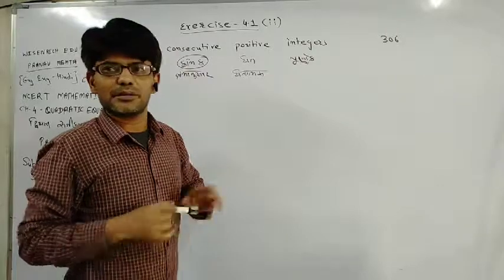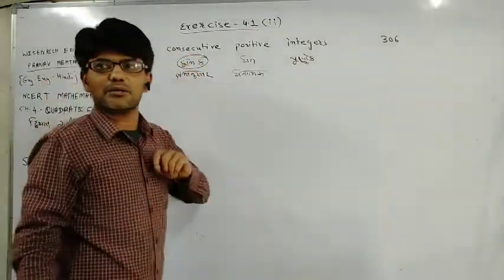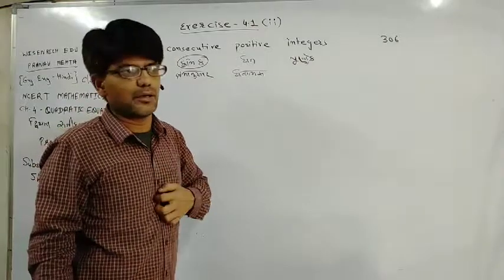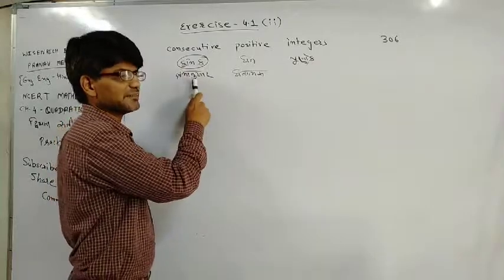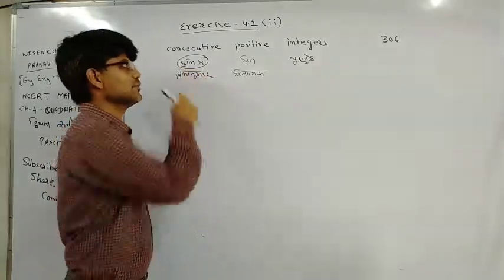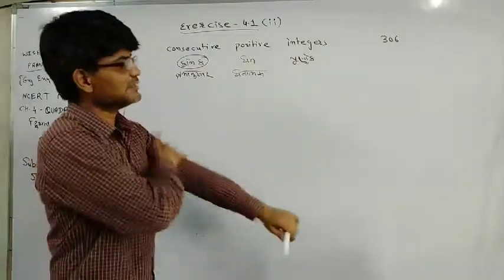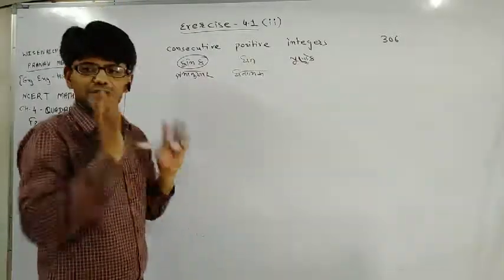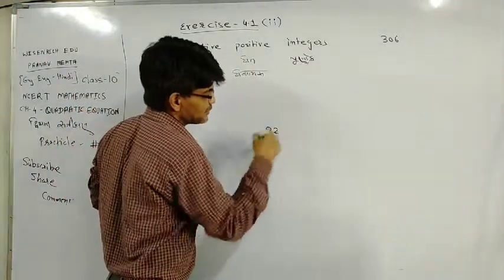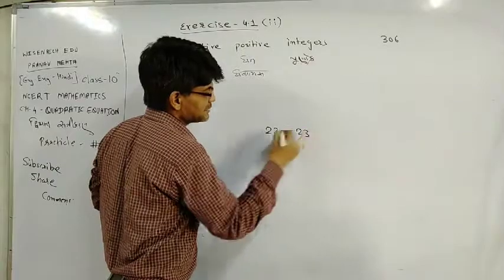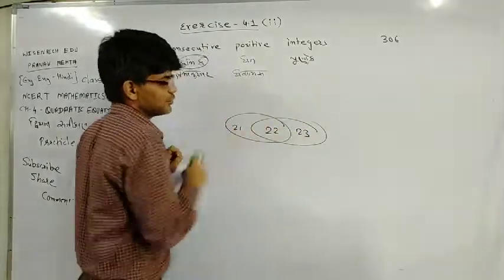We must have heard kramik sam sankhya, kramik visham sankhya - consecutive even numbers, odd numbers, yugma sankhya, ayugma sankhya. But here it is just kramik sankhya. If we take any number like 22, then kramik sankhya would be 22 and 23, or even numbers 22.